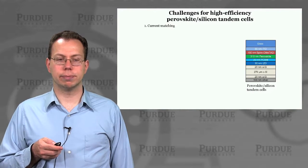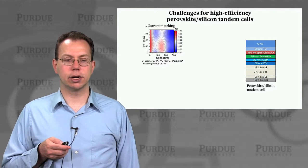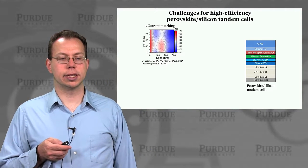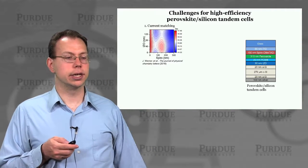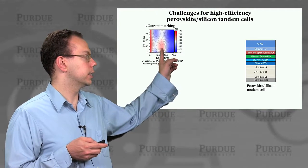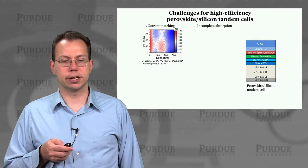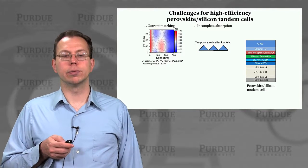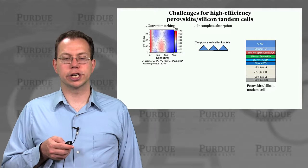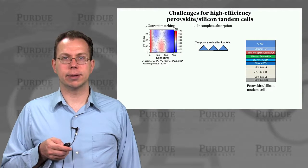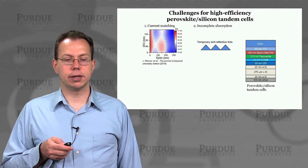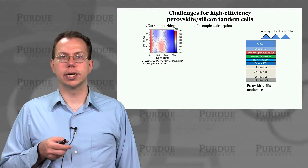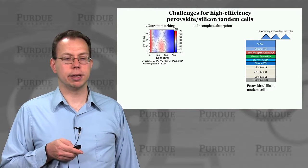Now there are still some remaining challenges. One is current matching, showing how it depends on the thickness of the various layers. You can see there's not necessarily just one answer, but certain ranges are better than others. Incomplete absorption is certainly a key challenge where one or more of the layers generating photocurrent are not absorbing all the light they could. There have been approaches to alleviate this using temporary anti-reflection microtextured foils at EPFL.